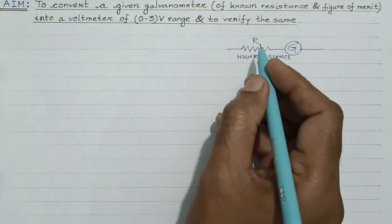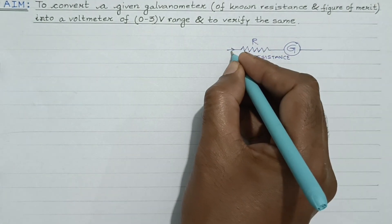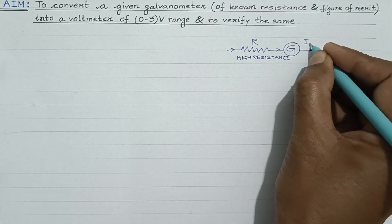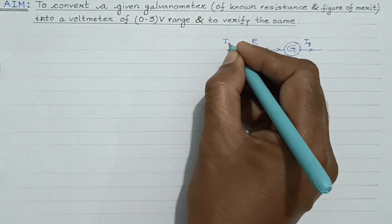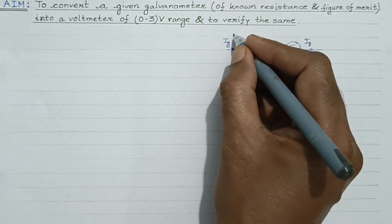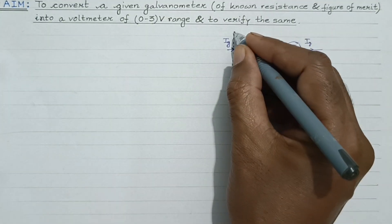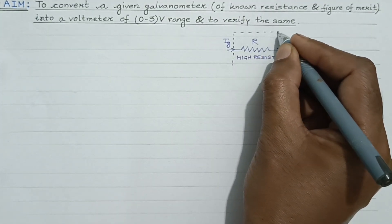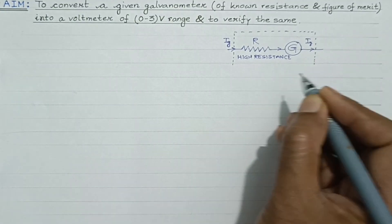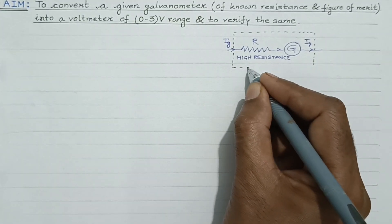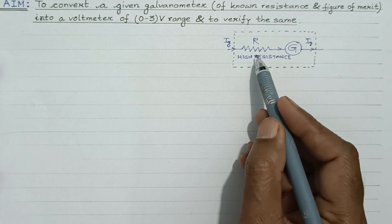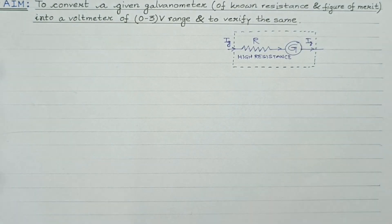The value of R is to be adjusted in such a manner that a safe value of current flows through the galvanometer, which is Ig. Ig is the current for which the galvanometer shows full scale deflection. So basically, the series grouping of this high resistance wire and the galvanometer will constitute a voltmeter. A voltmeter is a very high resistance device; an ideal voltmeter possesses infinite resistance.